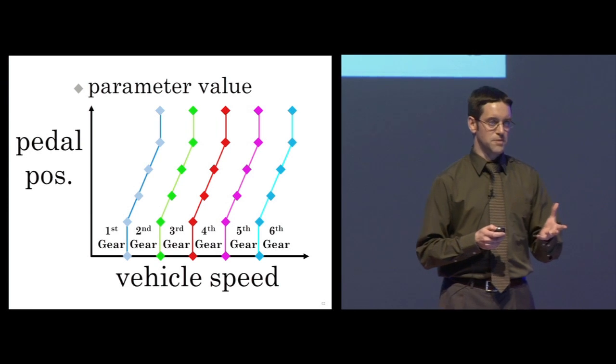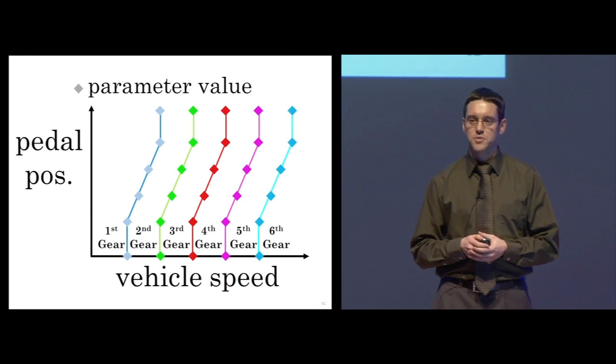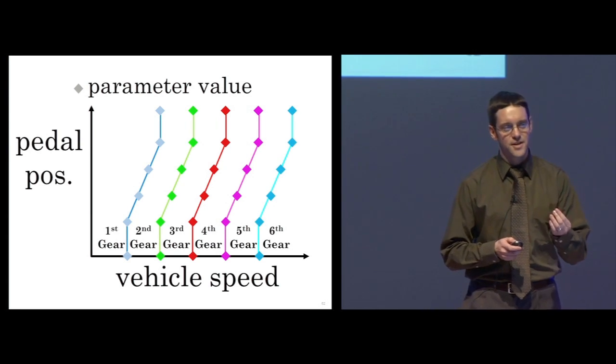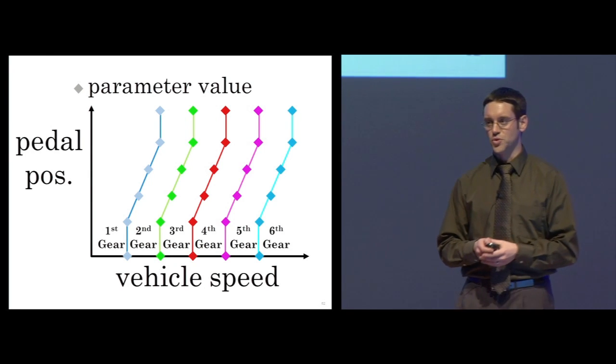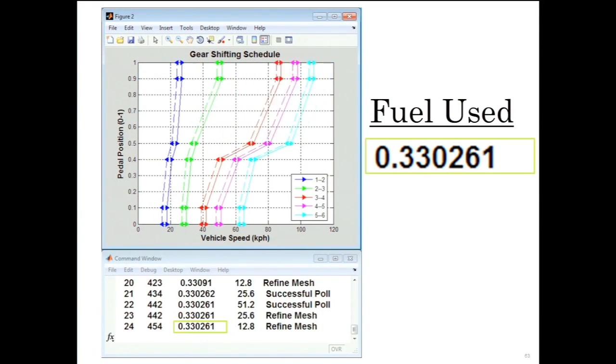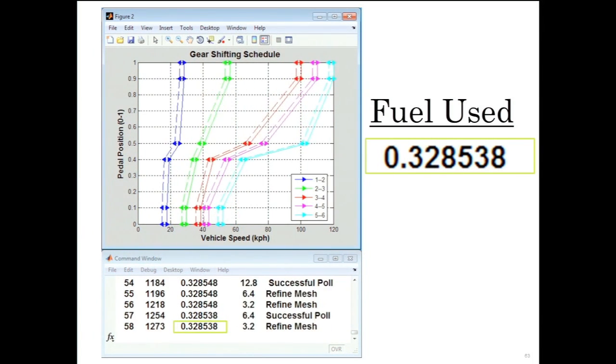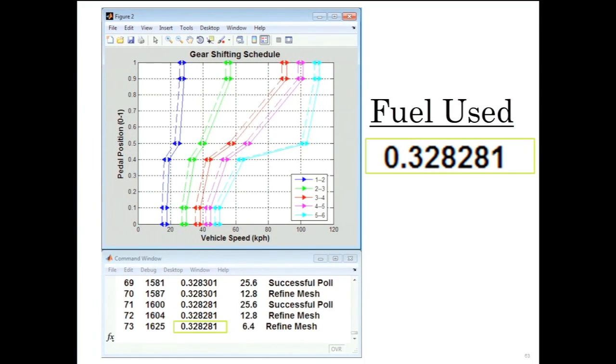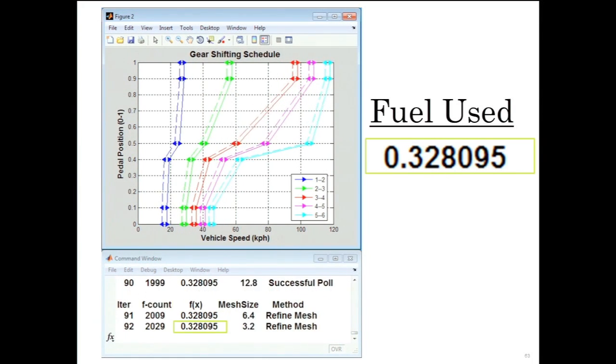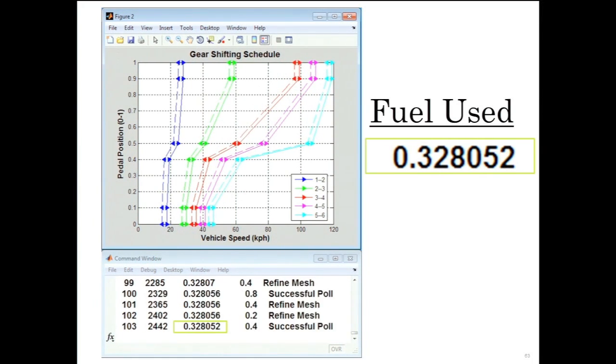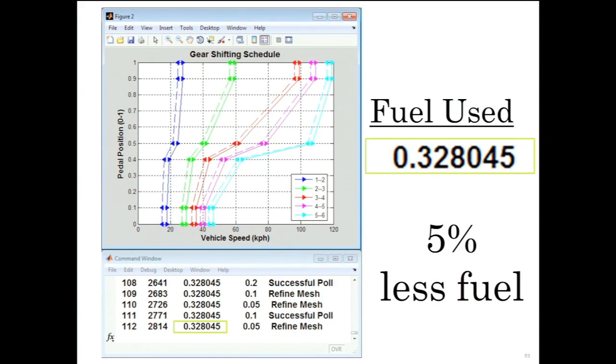We define these parameters in MATLAB and then Global Optimization Toolbox will find the set of values that minimizes the fuel used. This animation shows you how the table evolved during the optimization, which took about 4,000 individual simulations. Using the system level model and the optimization capabilities, we found a set of values that used 5% less fuel.